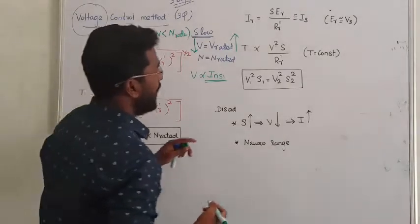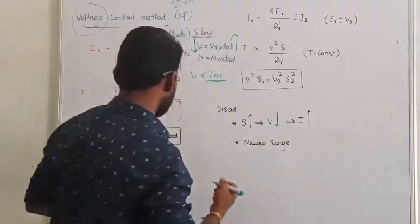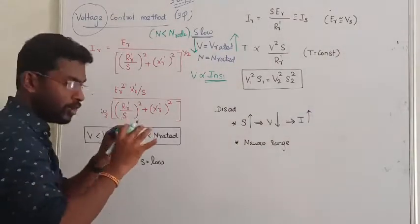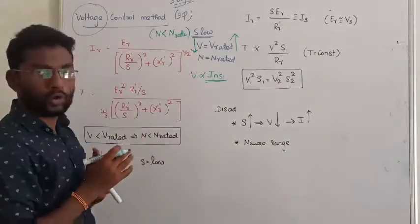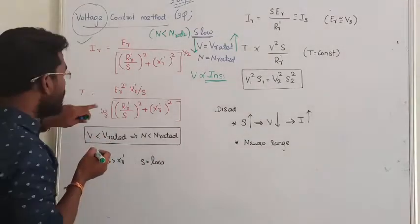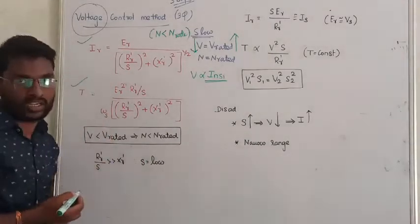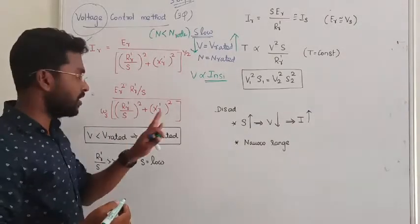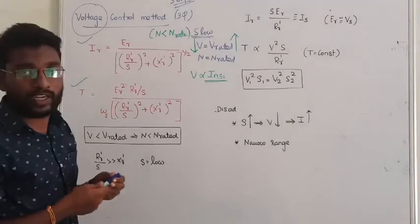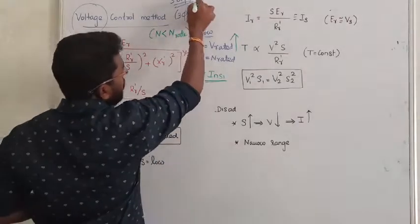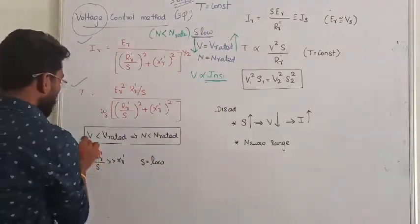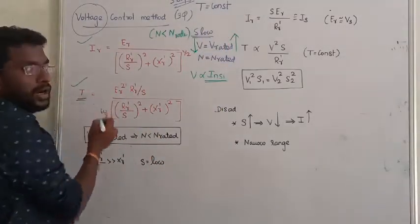In this method, when the value of slip is going to be very, very small — under running conditions — we need to look at two equations: the rotor current equation and the torque developed by the induction motor. In speed control, the load torque is always going to be constant, and therefore the internal electromagnetic torque is also going to be constant.